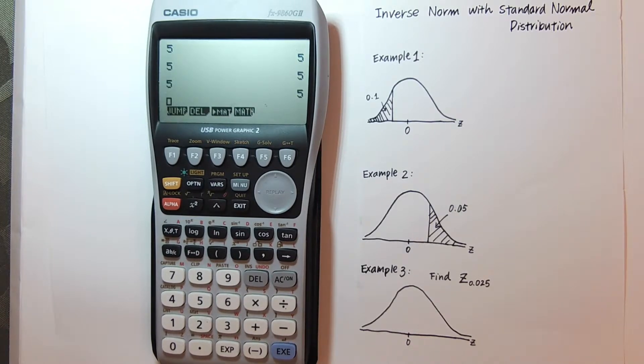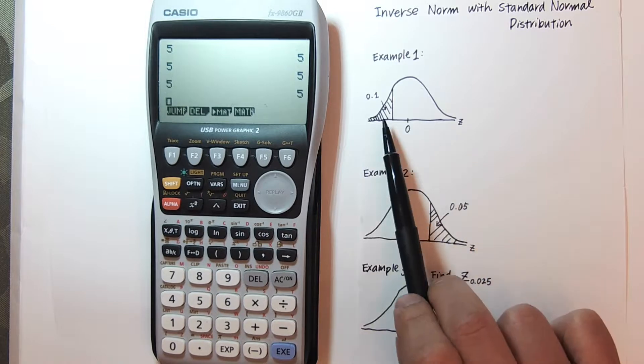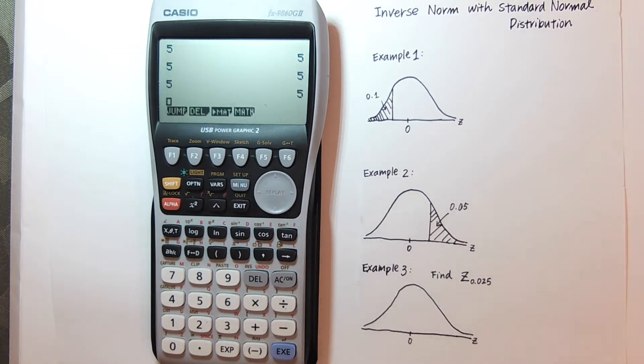This video is designed to show you how to find the inverse norm, or a Z value, given an area on a Casio graphing calculator.